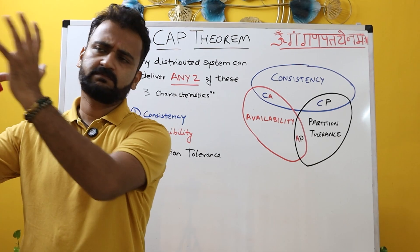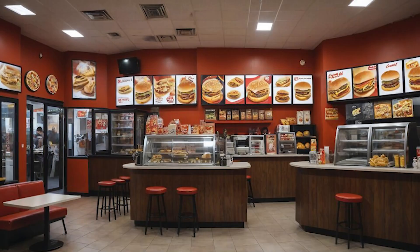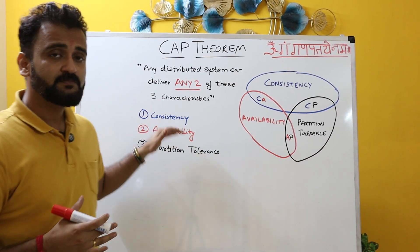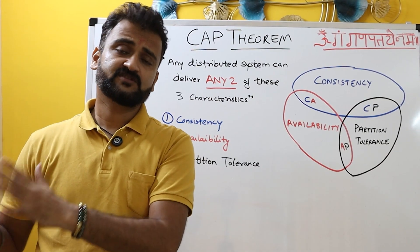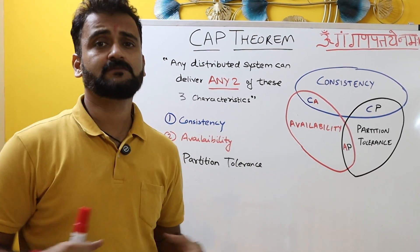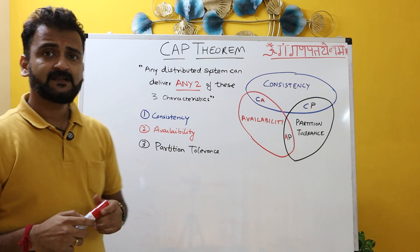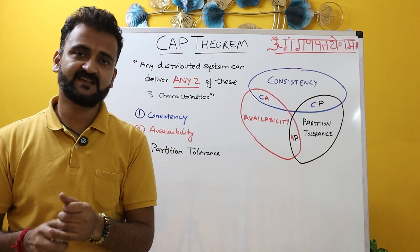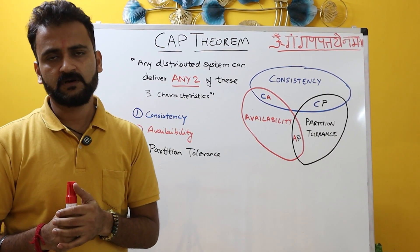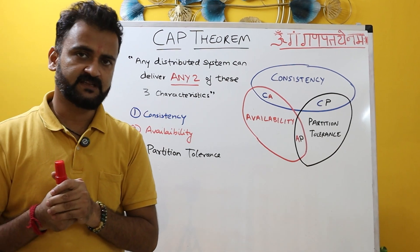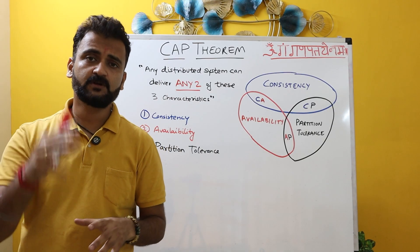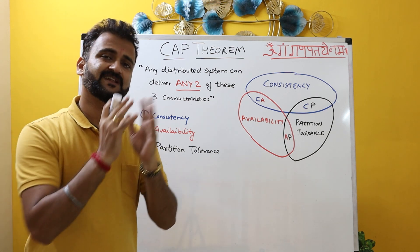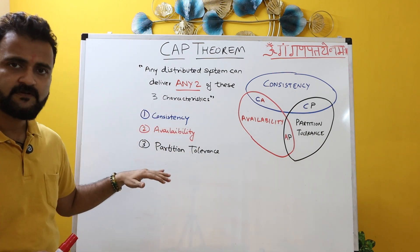Let's take a simple example. Consider we have three different McDonald's stores in a city and we want to apply CAP theorem. Consistency would mean that all the burger prices shown have to be consistent across all three stores. Availability means that a certain section of your McDonald's application — like ordering a burger or ordering for home delivery — has to be available all the time. And partition tolerance means that even if the three stores are unable to communicate due to a network failure, every store is functional and a user could directly connect and order food.